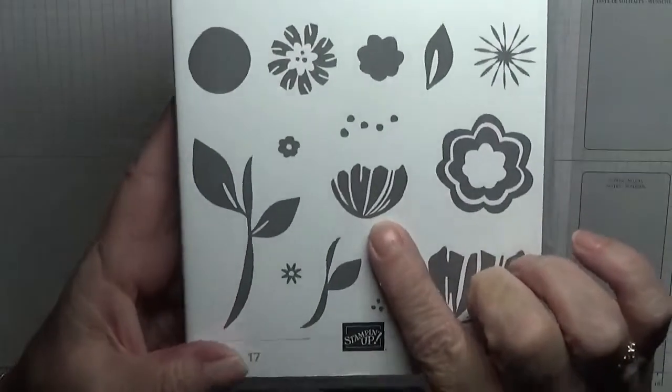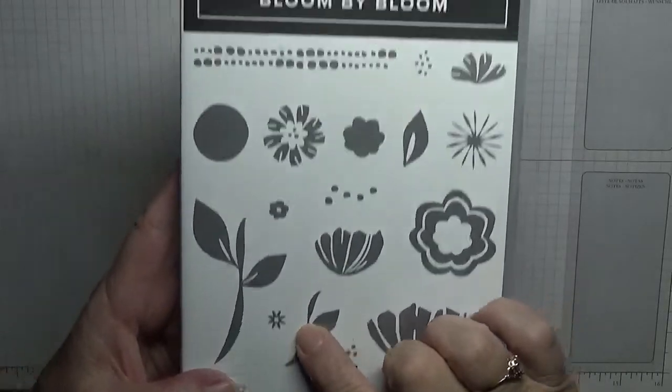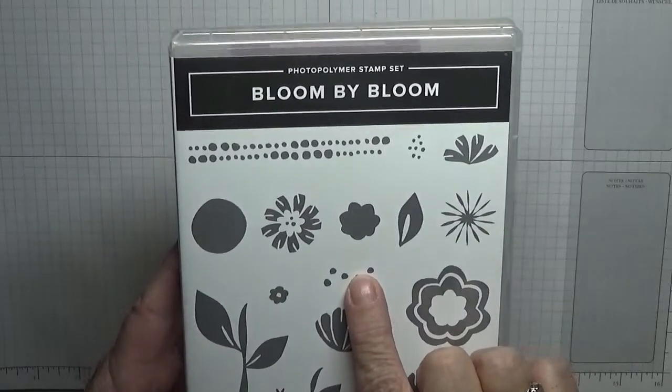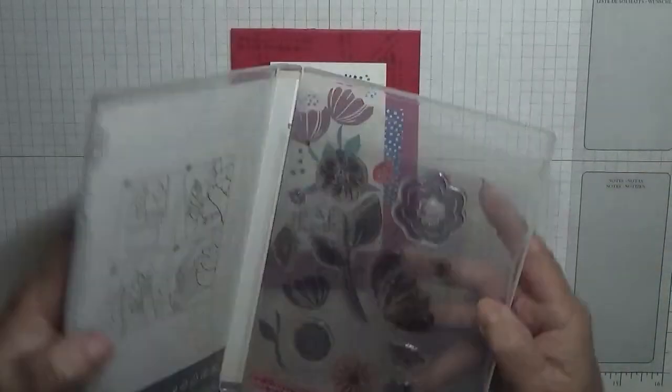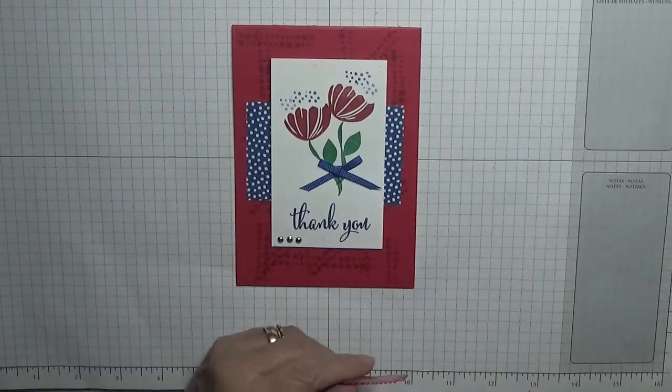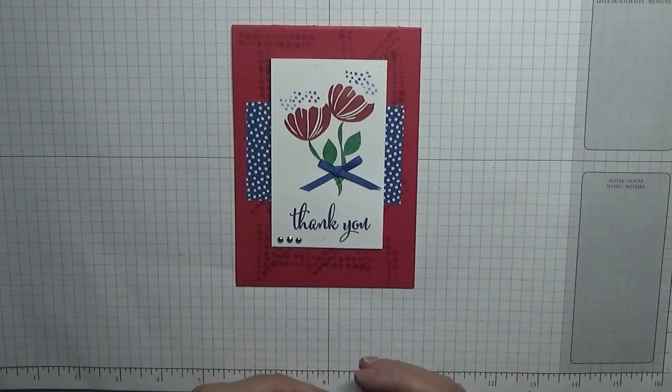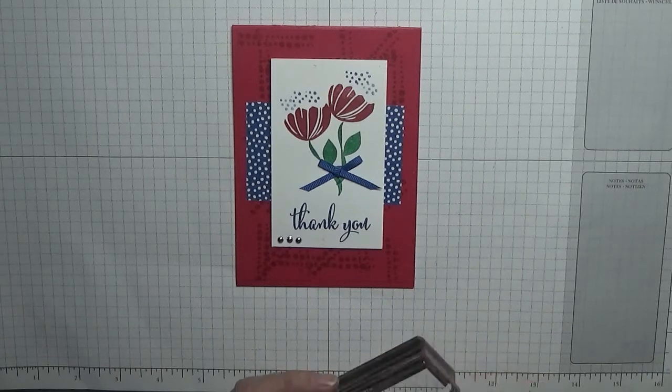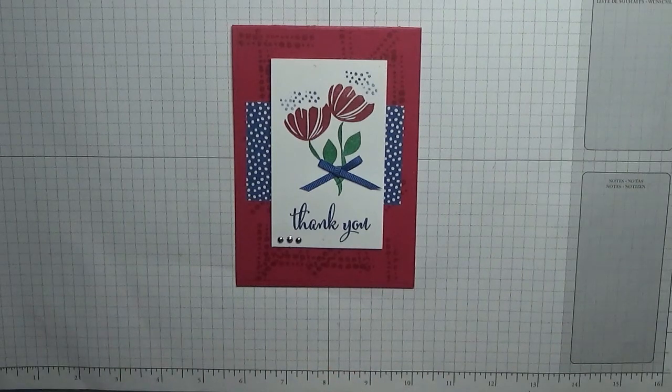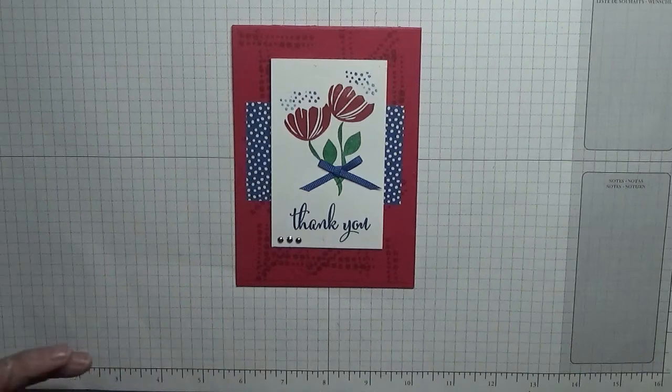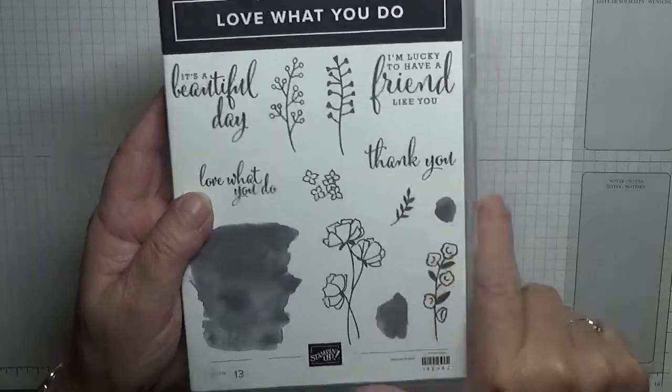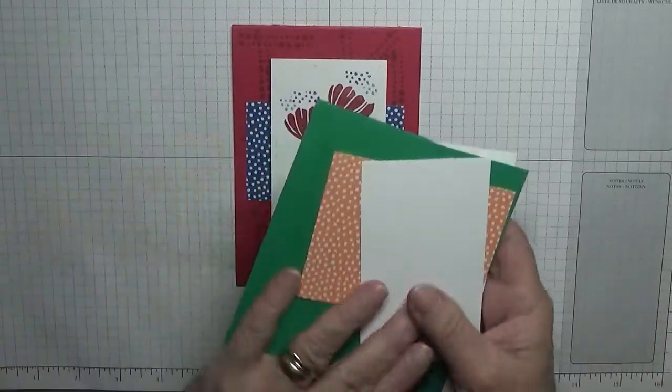I'm going to use that small flower, that small stem, and then the long row of dots and then tiny dots. In fact, I never got the long row dots out. For the thank you, that comes out of the stamp set Love What You Do.